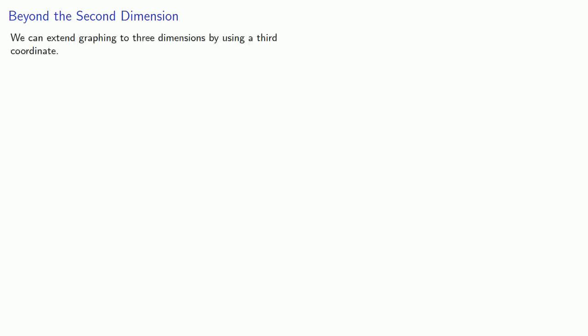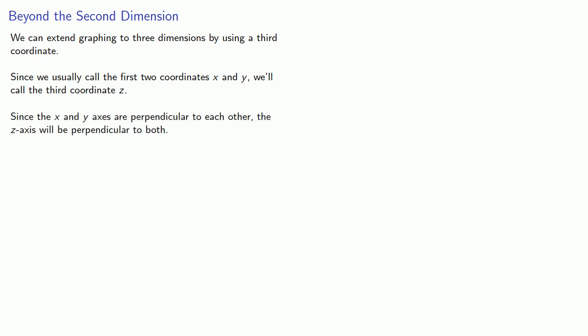We can extend graphing to three dimensions by using a third coordinate. Since we usually call the first two coordinates x and y, we'll call the third coordinate z. And since the x and y axes are perpendicular to each other, the z-axis will be perpendicular to both.